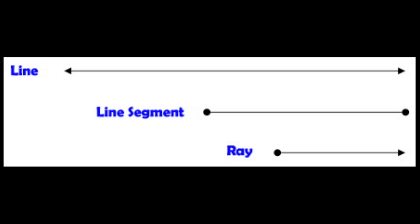If you study the first dimension, you can find only three objects: the line, the line segment, and the half line or ray. Thus, the number 3 is appropriate to symbolize the first dimension.